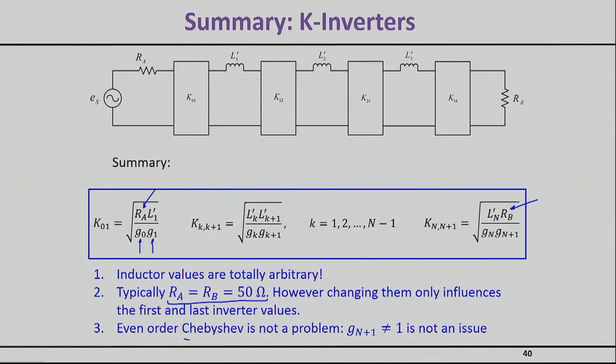When we were talking about Chebyshev polynomials and approximations, we said that your last G parameter may not equal one in the normalized domain. This might have appeared as a problem because with a 50 ohm load and 50 ohm source, you're forced to not have a 50 ohm load. It turns out that it's not an issue because this G parameter comes at the very end and your inverter will take care of the impedance matching.